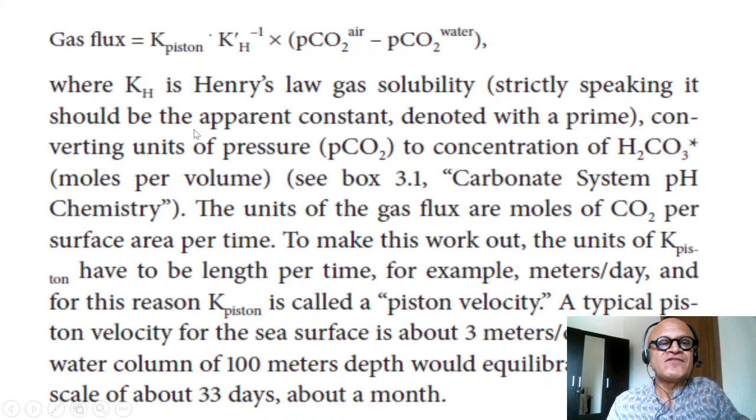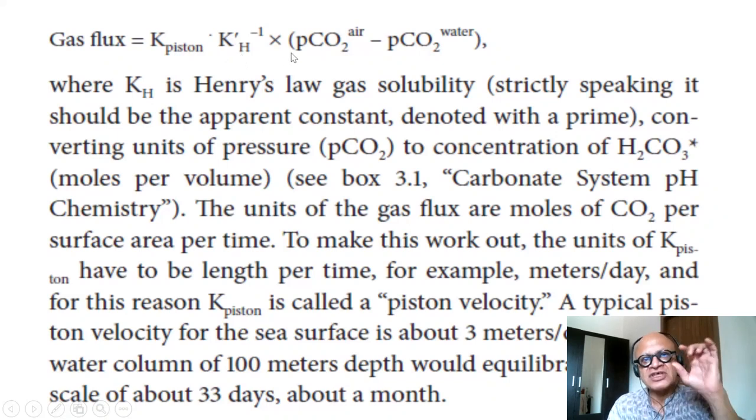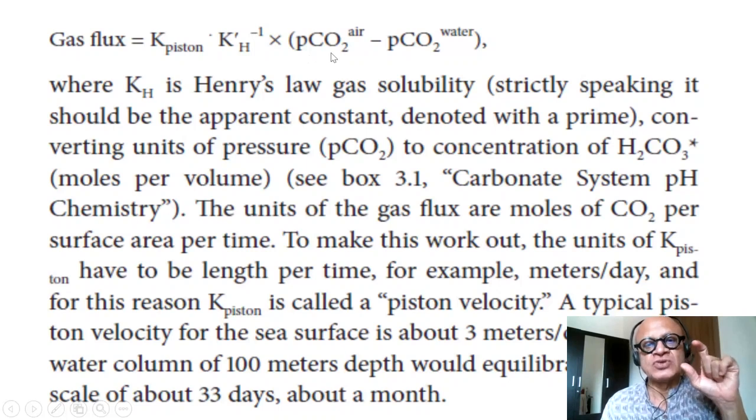The general formulation for gas flux is some piston velocity. It's the speed with which the exchanges are being driven at the interface and the Henry's law gas solubility that we looked at before. It's non-ideal, so strictly speaking it's the apparent constant denoted with a prime. So that's 1 over K prime H times the difference in the partial pressure of CO2 in the air and in the water.